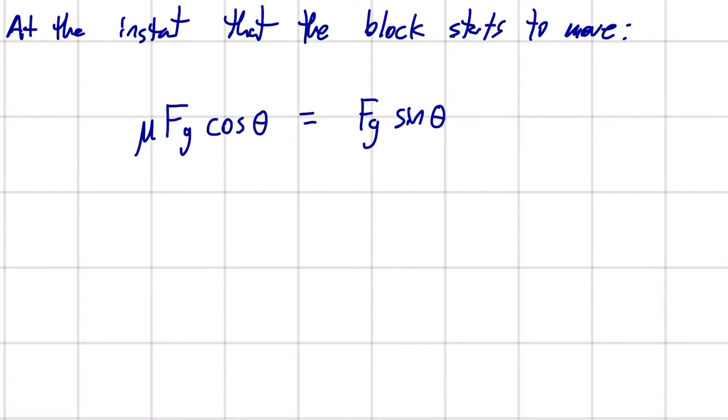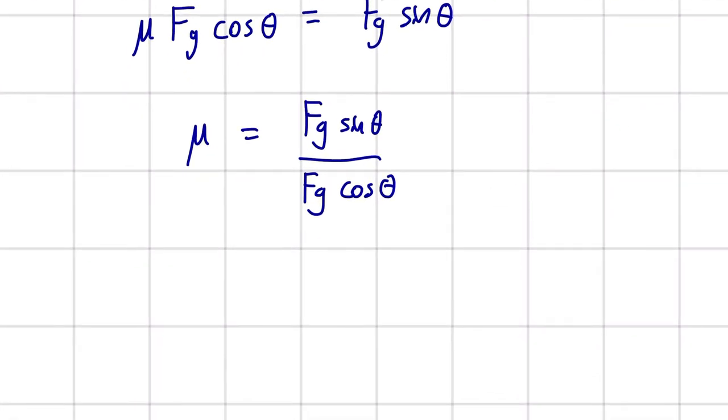What I'm going to do first here is isolate this mu by bringing Fg cos theta to the other side of the equation as a division. So Fg sin theta over Fg cos theta. And here we're going to see that our Fgs cancel out.